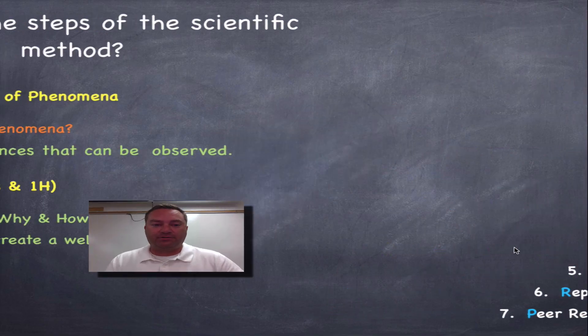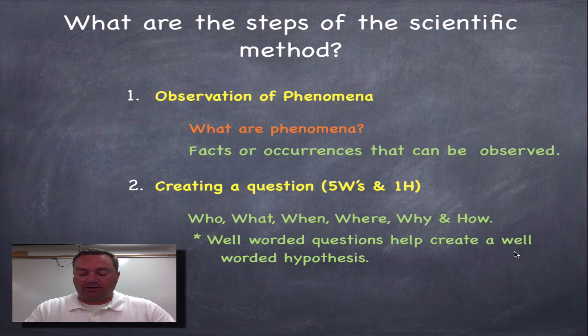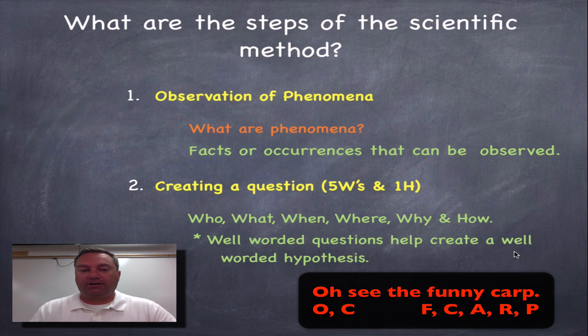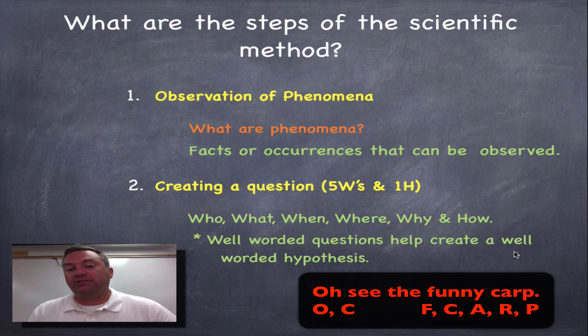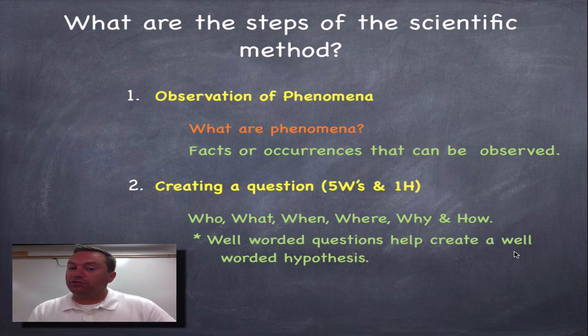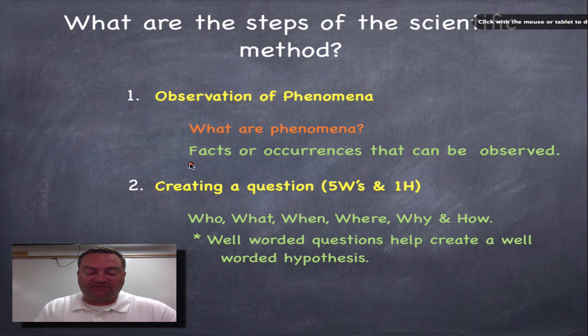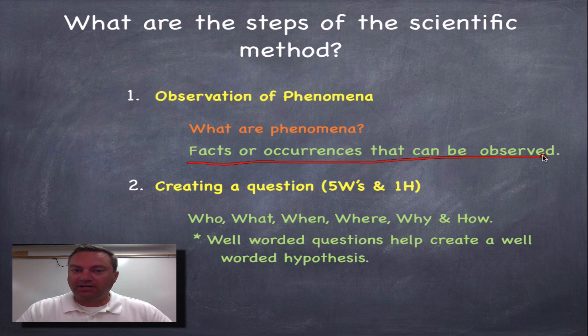Let's look at each one of these steps in a little bit more detail. Remember, OC, the funny carp. The first step is observation of phenomena. So what is phenomena? Phenomena is simply facts or occurrences that can be observed. In other words, it's the stuff that happens in the world that you can observe using your five senses.